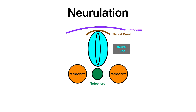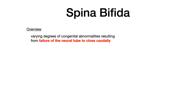Embryology is normal, but when embryology doesn't occur normally, you get pathology and congenital abnormalities. Let's talk about spina bifida. Spina bifida in general refers to varying degrees of congenital abnormalities that result from the failure of the neural tube to close caudally. In other words, if neurulation doesn't occur the way that it's supposed to, one of the manifestations of that is spina bifida. Let's go talk about the three different types.